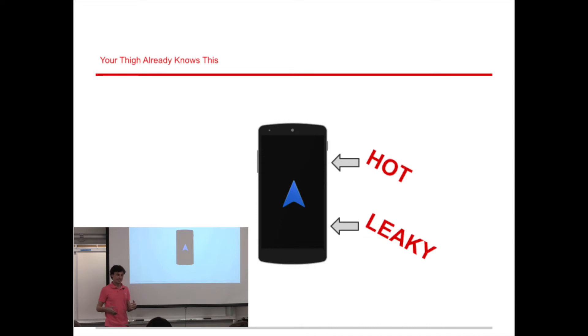And you already know this. Your thigh already knows this. When you're running a GPS on your phone, and you put your phone in your pocket, your phone's hot, which means your phone's leaking the information that you're using your GPS, which means your thigh is committing a side-channel attack against your phone's GPS.